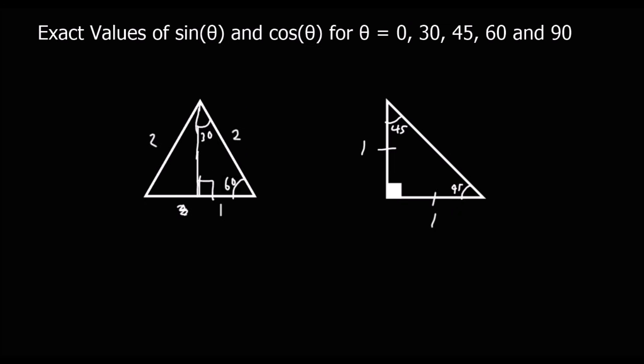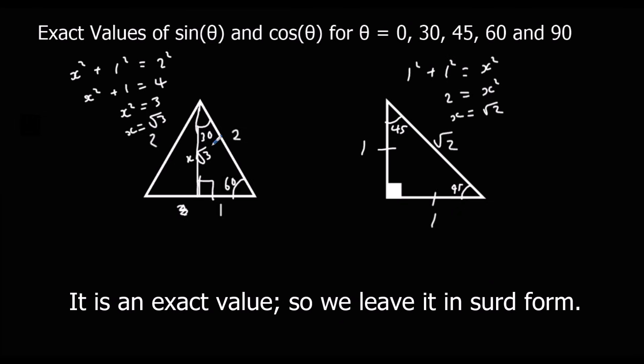So the next thing we've got to do is we're going to work out these missing lengths, the lengths we don't know. We're going to use Pythagoras. So here we've got this side, so let's call it x while we work it out. x squared plus 1 squared equals 2 squared. So x squared plus 1 equals 4. x squared equals 3. So x is root 3. So this length here is root 3. And here we've got 1 squared plus 1 squared equals x squared. So 1 plus 1 is 2 is x squared. So x is root 2. So this is root 2, and this is root 3.